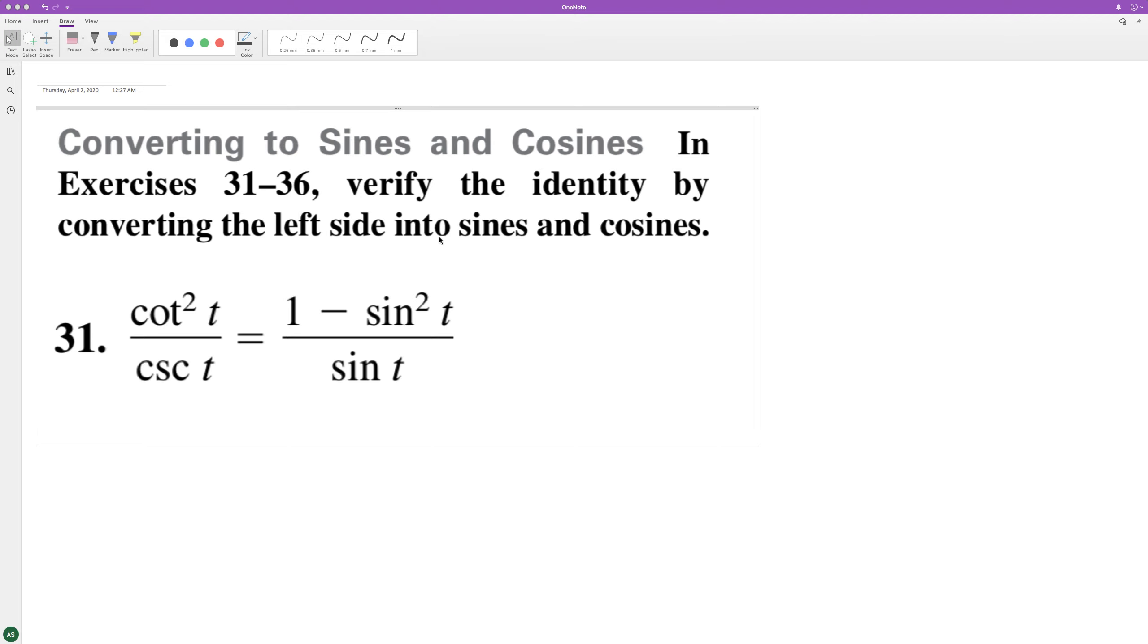We need to show that the left is like the right. So what we'll do here with cotangent is convert this into cosine squared t over sine squared t.